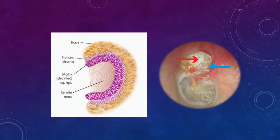In this picture, the red arrow shows a cholesteatoma and the blue arrow shows the erosions of the surrounding bone.